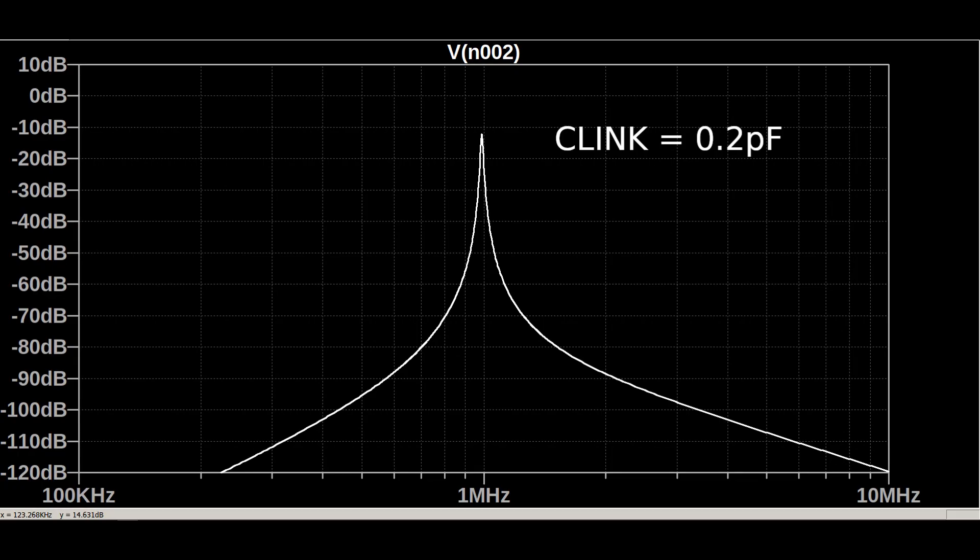As you can see from this graph, the selectivity is very good. It only passes signals right around 1 MHz. Unfortunately, the amplitude of the signal, as seen on L2, will be small. So if this was a crystal radio, the signal would be very faint.